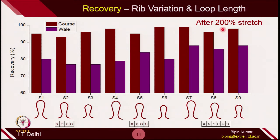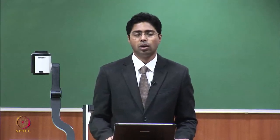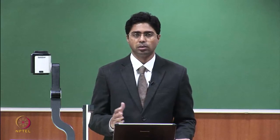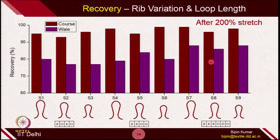The reason recovery is poor in the wale direction is that when you extend to 100% stretch, it may be possible that the yarn itself permanently deforms and cannot recover back. In the course direction you can expect maximum recovery. When you put any fabric panel on a garment, you need to make sure the direction in which you are using the panel is correct — if you design so that maximum deformation is in the wale direction, the fabric will bag after some time because it will permanently deform.